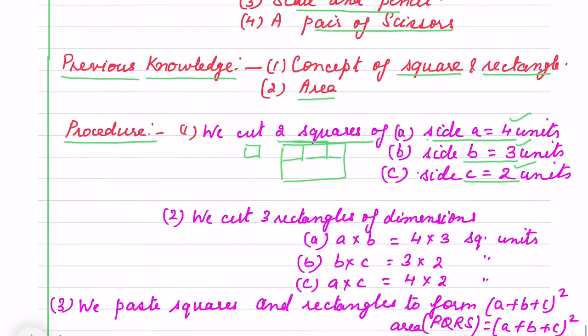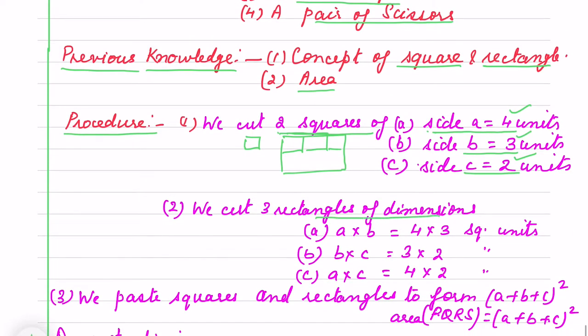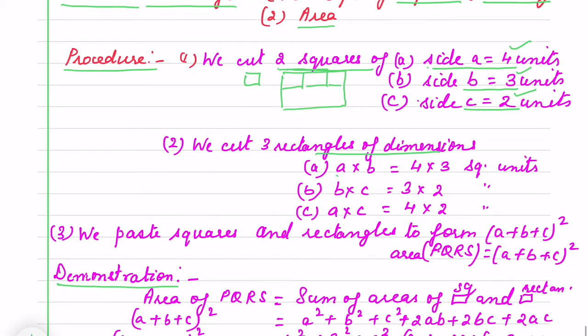So we cut three rectangles of dimension. We have here I have taken a=4 and b=3. So one you will paste where to show that it is a rectangle. And two you need to put on the large (a+b+c)² square. b×c is 3×2.